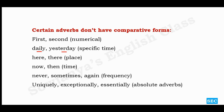Absolute adverbs like 'uniquely,' 'exceptionally,' and 'essentially' also cannot take comparative or superlative forms — they are themselves the highest degree. We can't say 'more uniquely' or 'most uniquely.' 'Unique' itself means one and only. 'Exceptionally' means going out of the way, and 'essentially' means extremely necessary — we can't say 'more essentially' or 'most essentially.' These are absolute adverbs.